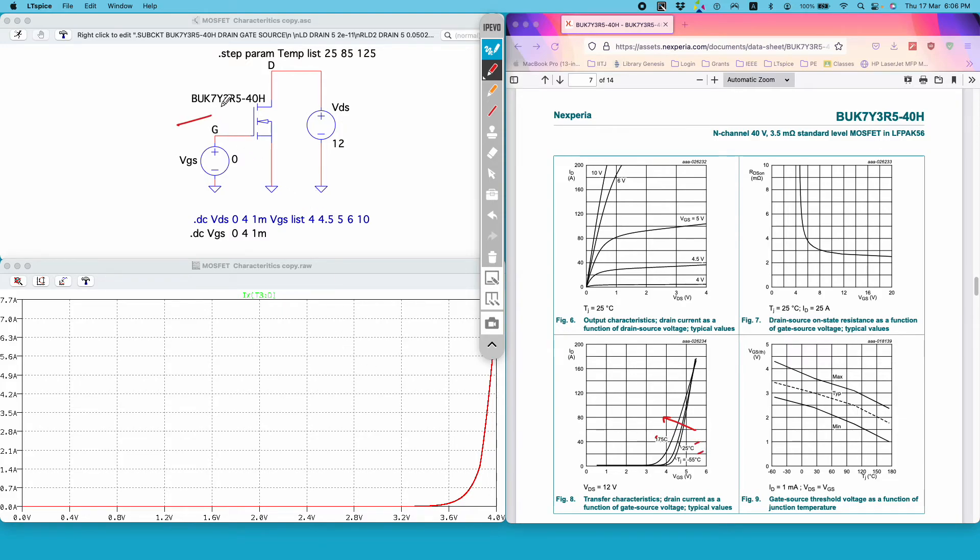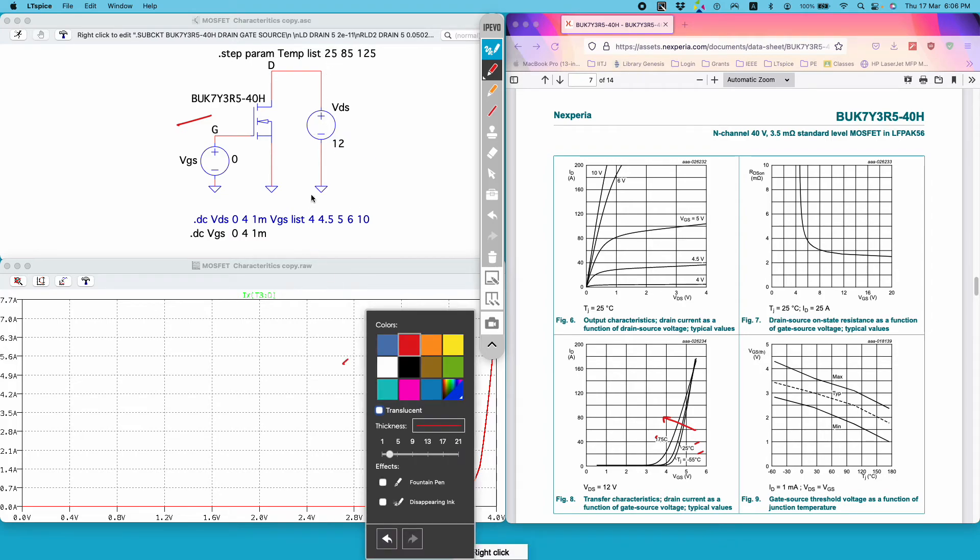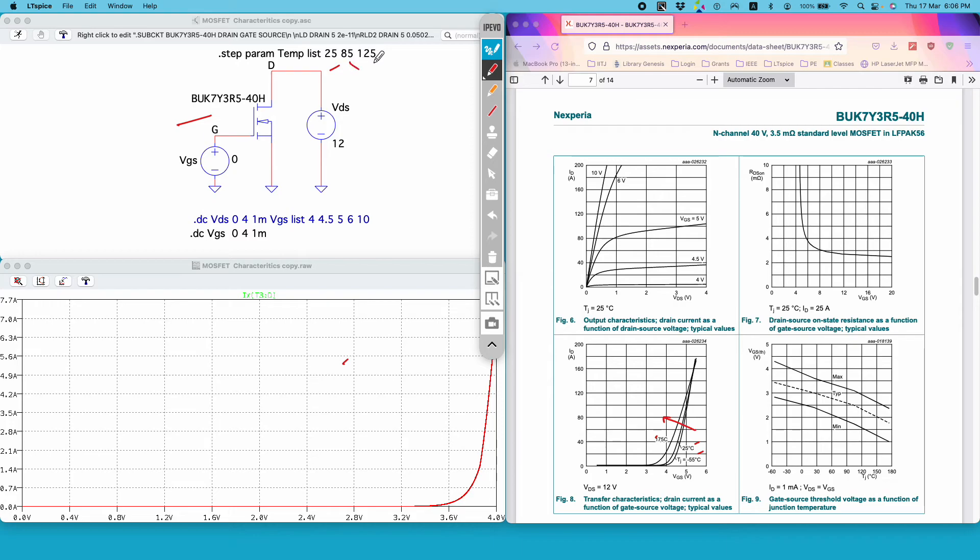But this model is very basic and it does not capture the thermal behavior of the MOSFET. Therefore even though I am trying to plot the curve for three different temperatures: 25, 85, 125 degrees Celsius, there is no effect on the plot. It's just plotting for one default temperature of, I guess it's 25 degrees Celsius.